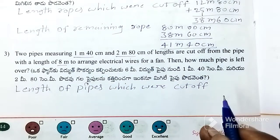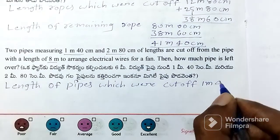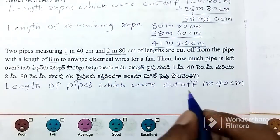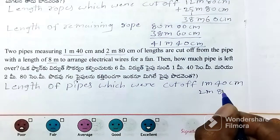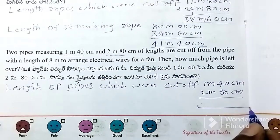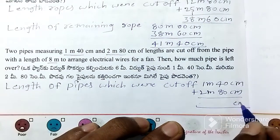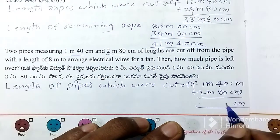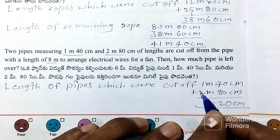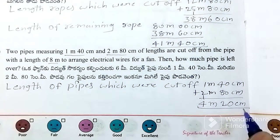First, 1.40 m. The length of pipe is 1.40 m, then 2.80 m. Add the lengths first: 0 plus 0 is 0; 8 plus 4 is 12, carry 1; 2 plus 1 plus 1 is 4. So the total cut off is 4 meters 20 centimeters.